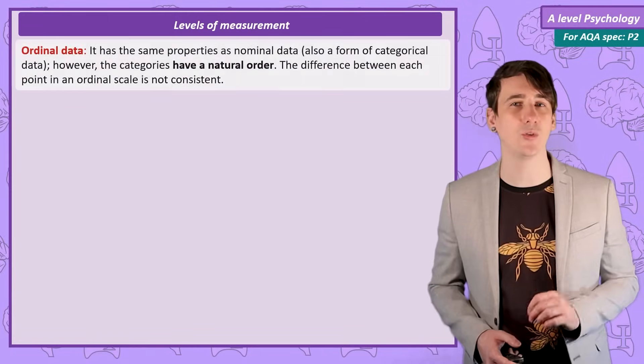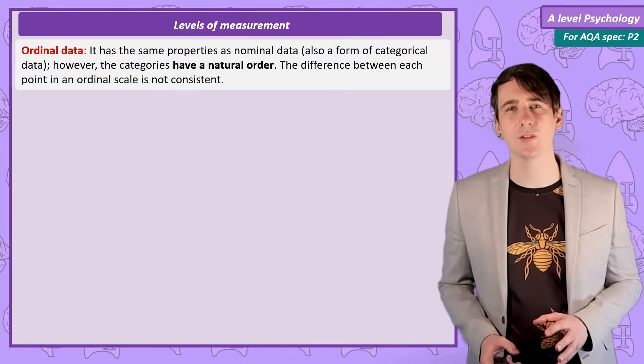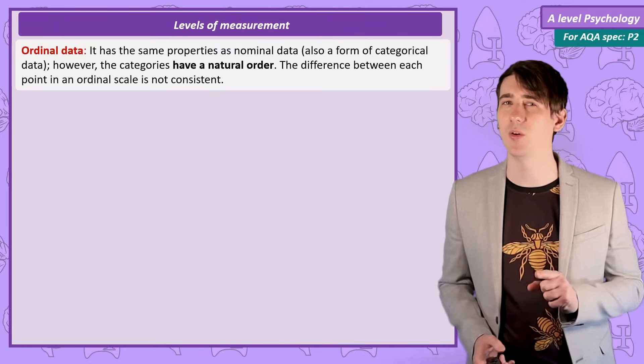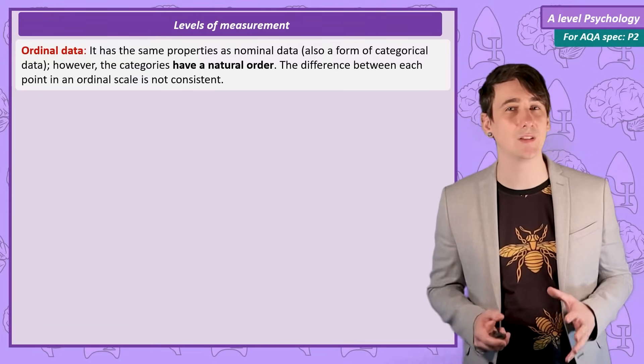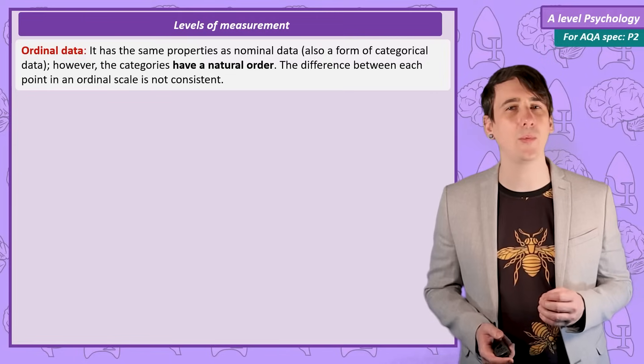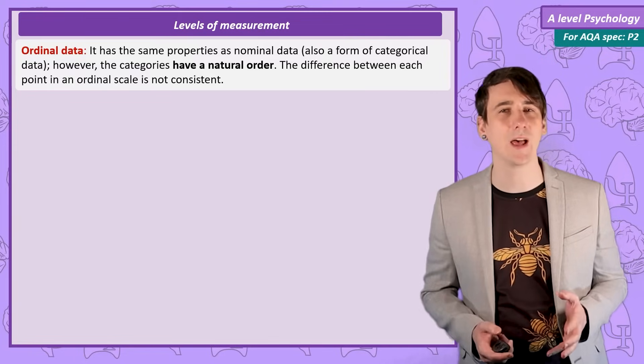Ordinal data. Moving up a level in precision is ordinal data. It may not surprise you to learn this is data we can place in order. Now importantly we are not saying the difference between each point is the same, but we can say if one point on the scale is more or less than another point.